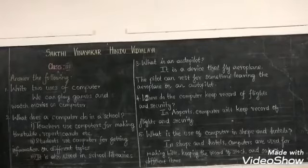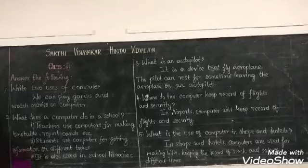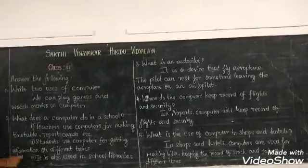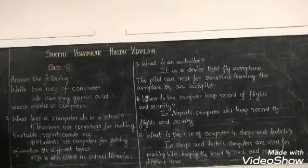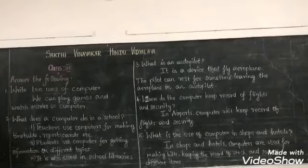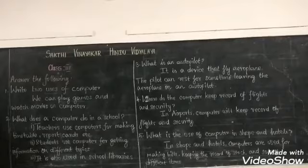The class timetable and the student report cards — everything the teachers are making using the computer. The second point is students use computer for getting information on different topics. They are searching different topics using Google, using the computer. The third one is libraries — computers are also used in school libraries to maintain book records and track how many students have borrowed each book.